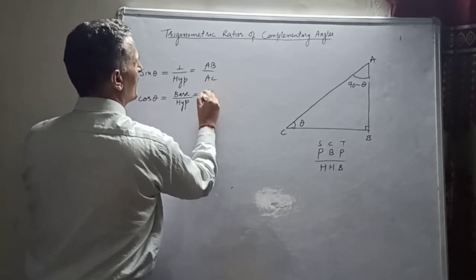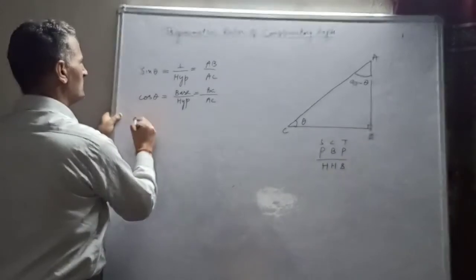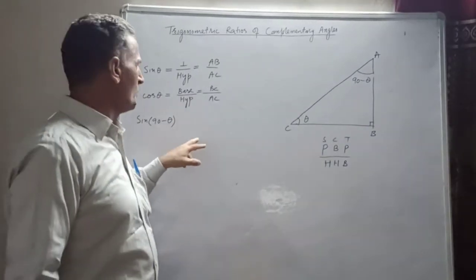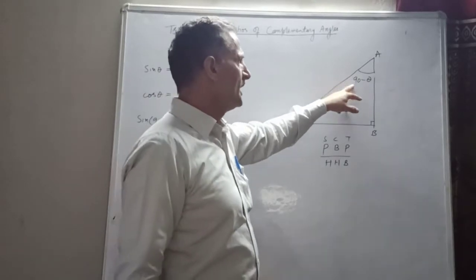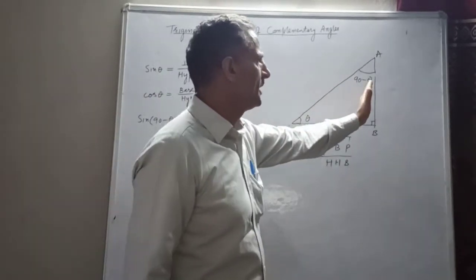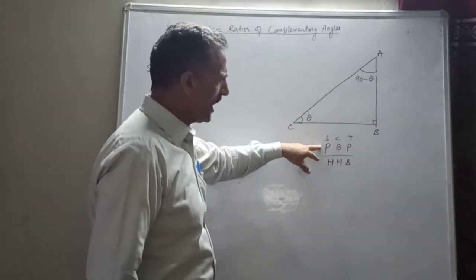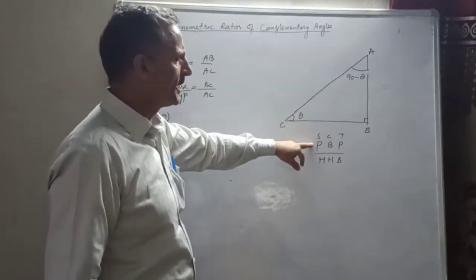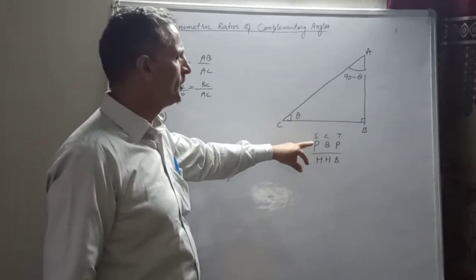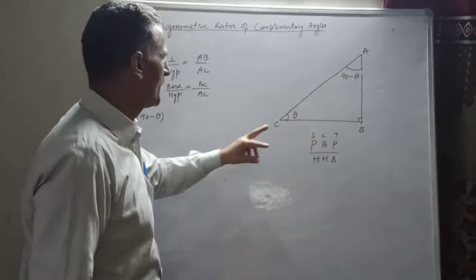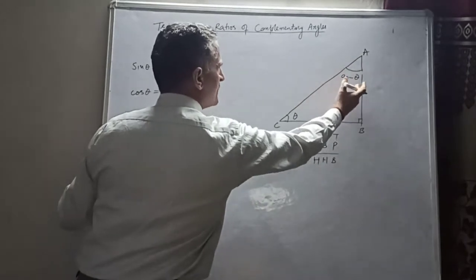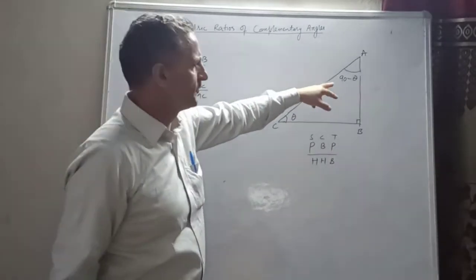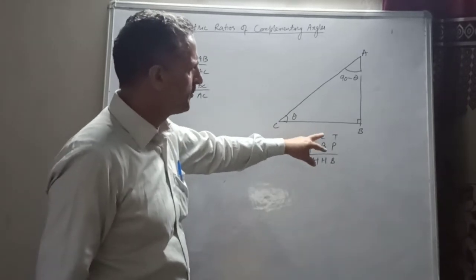Now, what is the complementary angle sine of (90 minus theta)? When you have to find the complementary angle for this vertical angle, the perpendicular becomes BC and the base changes accordingly. Remember: when it is the vertical angle, for perpendicular you write the base, and for base you write the perpendicular — you make the swap. So when you write sine of (90 minus theta), for this vertical angle you change perpendicular to base and base to perpendicular.